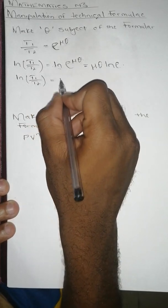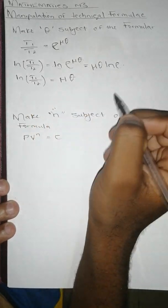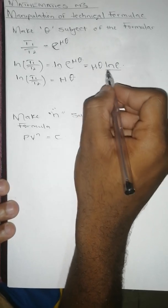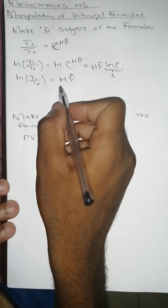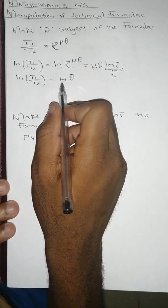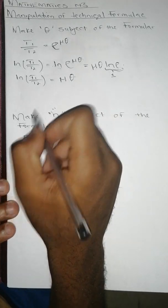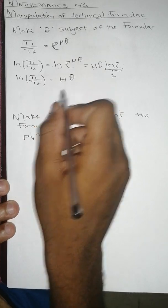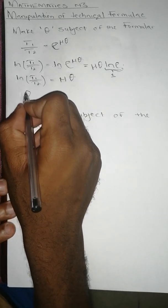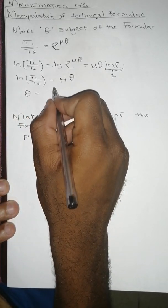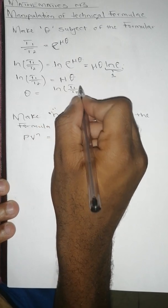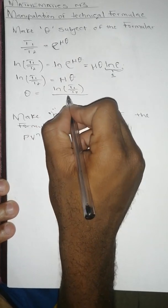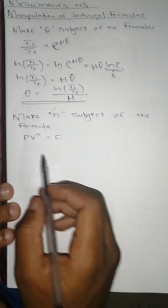This equals to one, and then we divide both sides by μ to remain with theta. So theta equals to ln(T₁/T₂) all over μ, and that's it for the first question.